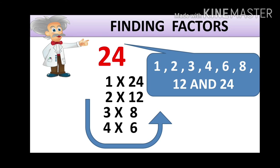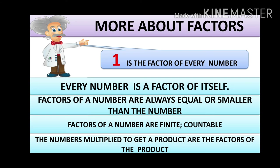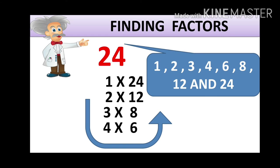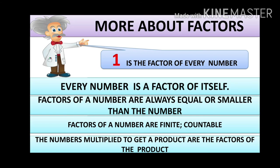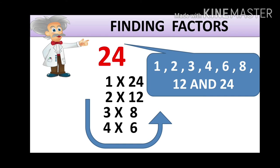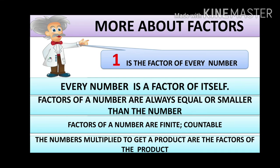So let's see more about factors. First: 1 is the factor of every number. As I said, for 24, I can keep all 24 in one group — so 1 is the factor of every number. Next: every number is a factor of itself. Here you can see that 24 can be kept in one group, or in 24 groups I can keep 1 apple each. As seen in the activity, in 6 baskets I can keep 1 apple each, and in 1 basket I can keep all 6 apples. So every number is a factor of itself — 24 is a factor of 24, 5 is a factor of 5, 6 is a factor of 6.